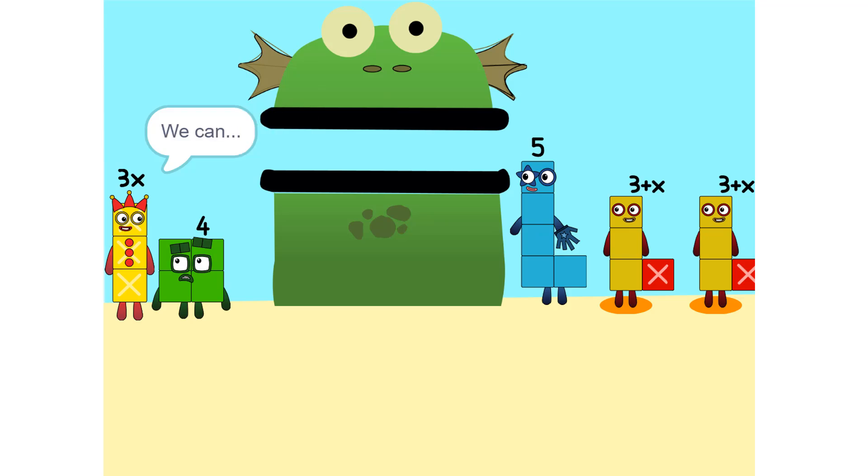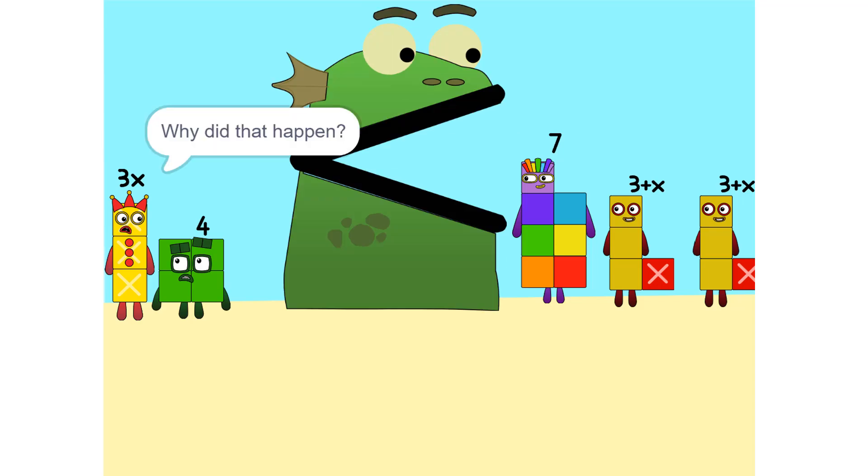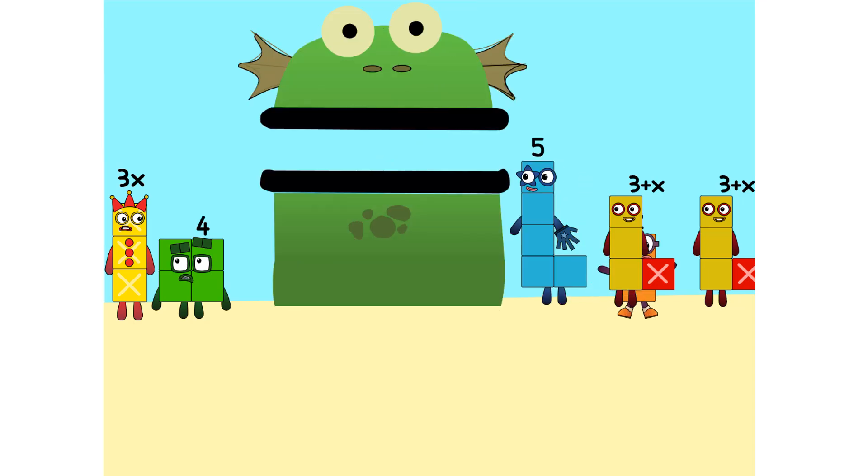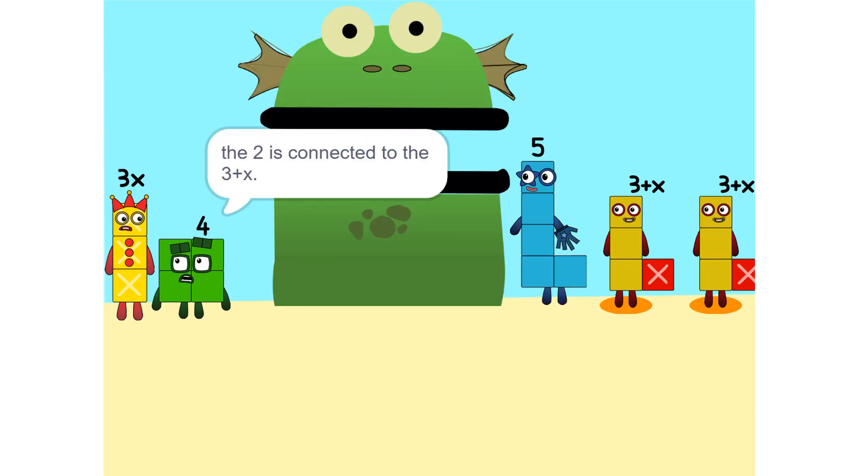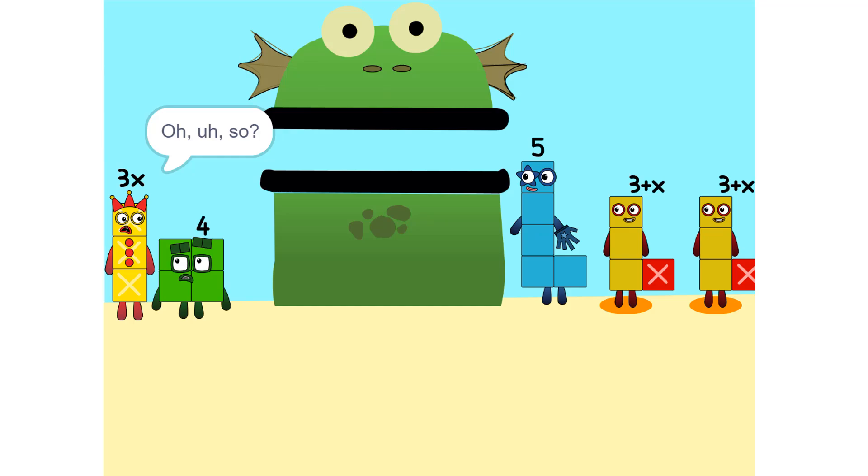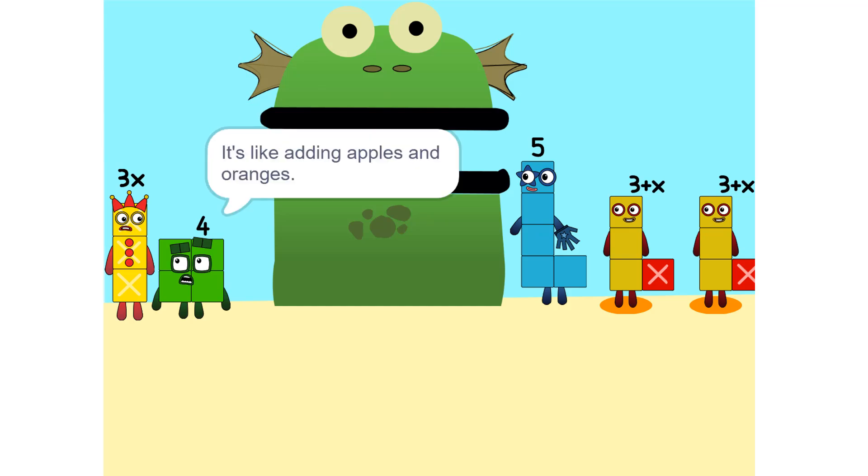I see something. We can add these. So why did that happen? Because the 2 is connected to the 3 plus x. So it's like adding apples and oranges. You can't.